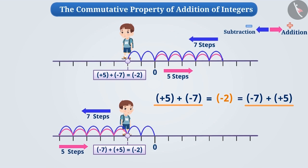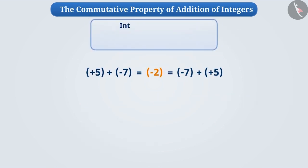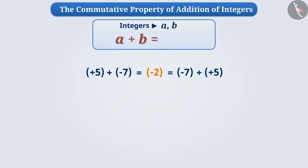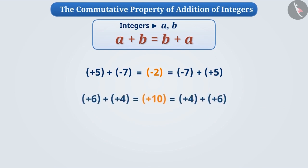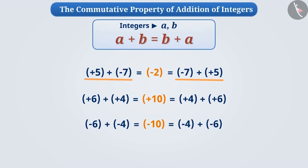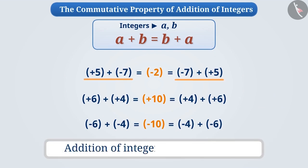This is also true for the sum of all integers — whether we add two positive integers, two negative integers, or two integers with opposite signs. That is, the addition of integers is commutative.